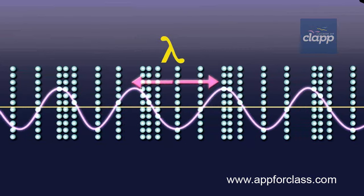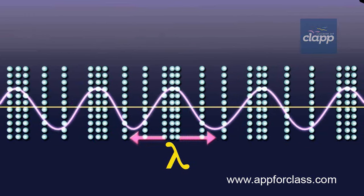Wavelength is the distance between two consecutive compressions or rarefactions.